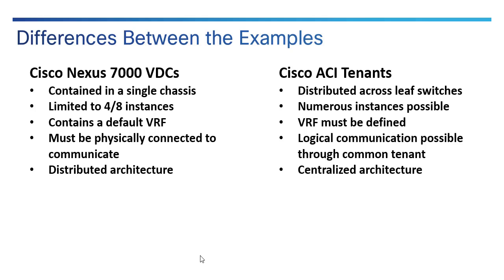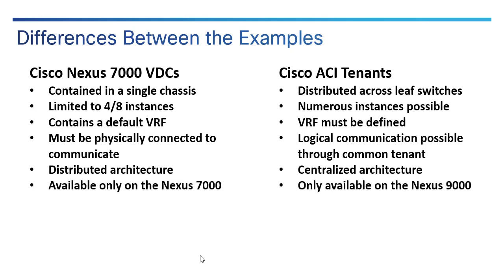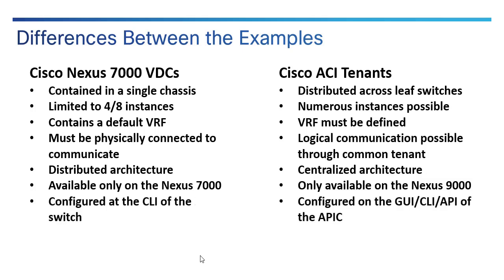The Nexus 7000 virtual device contexts are built on a distributed architecture, while in ACI everything uses a centralized architecture. Nexus 7000 VDCs are only available on the Nexus 7000 switch — not on the 5000, 3000, or 9000 — and Cisco ACI is only available on the Cisco Nexus 9000 and requires a specific software image. Finally, Nexus 7000 VDCs are typically configured at the CLI of the switch, whereas in Cisco ACI you cannot configure the switches directly. Instead, you configure the controller — the APIC, Application Policy Infrastructure Controller — through the GUI, CLI, or APIs.